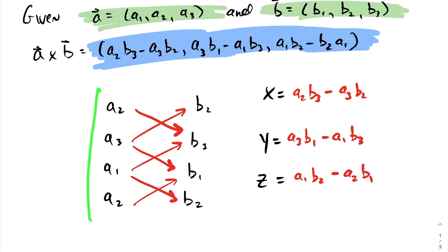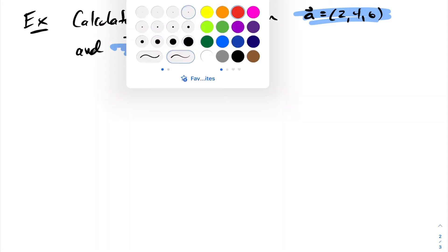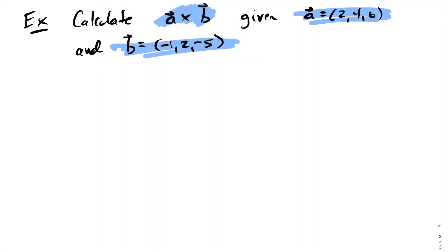This is a relatively easy way to derive the formula for a cross b. For the following example, we want to find the cross product of a and b, given that a = (2, 4, 6) and b = (-1, 2, -5). To do this, we write the second coordinate of vector a, which is 4, then 6, then the first coordinate 2, and back to that second coordinate. Do the same with vector b: 2, -5, -1, and back to 2.